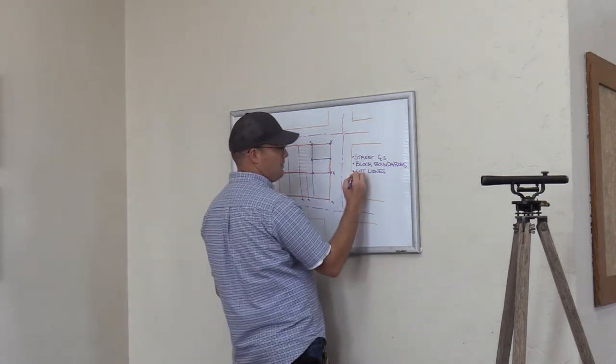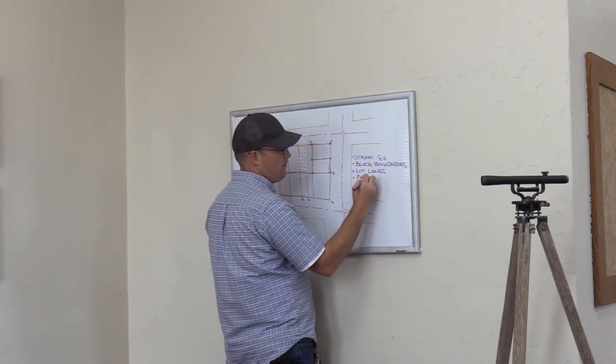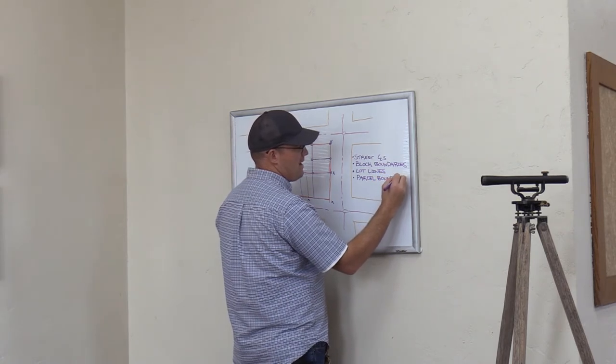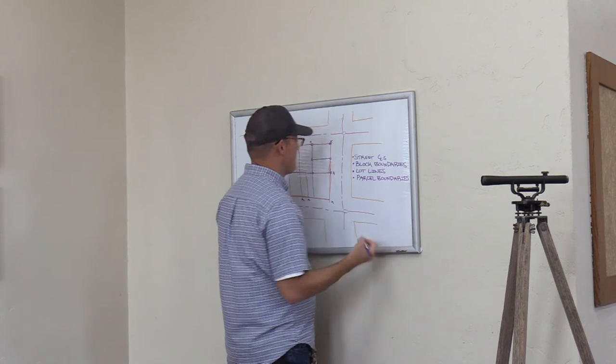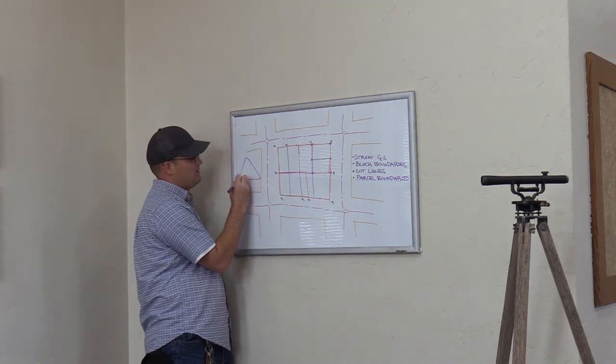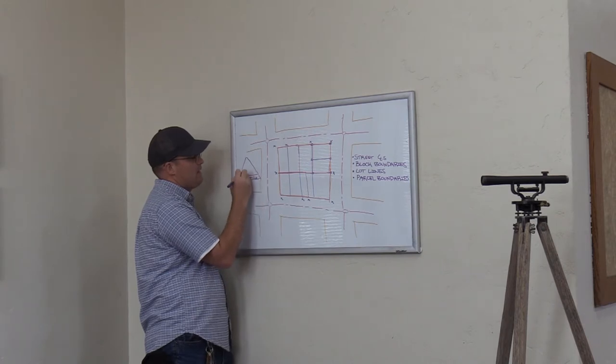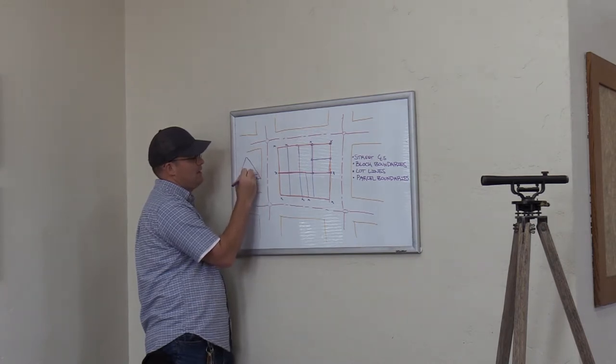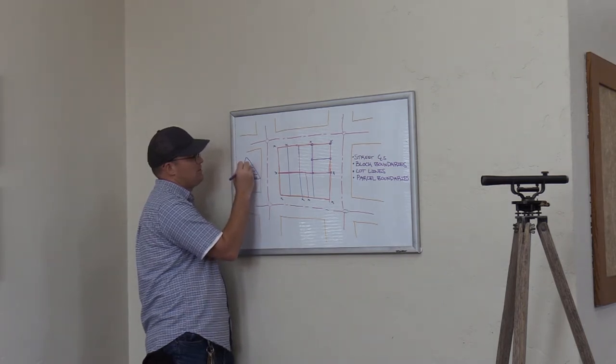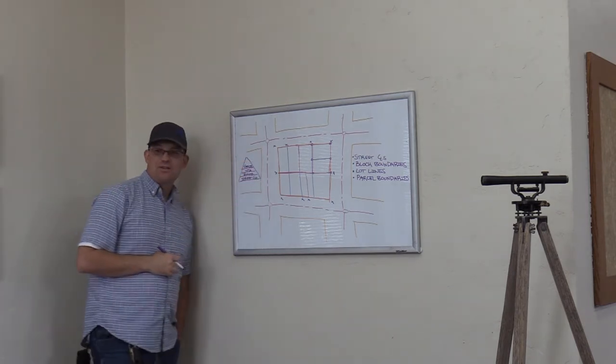We get the street center lines, then we get the block boundaries. Once we have the block boundaries, then we can put in the lot lines. Right, the blue. Once we have the lot lines in, now we can build a survey grade parcel layer. That's the thing that goes on. I built this wrong. That goes on the top. Okay, but you may ask yourself, so if I had to do this as a pyramid, it looks like this in the GIS. I'm not going to draw a very good pyramid either. So this is street center lines. And then we have block boundaries, blocks, lots, parcels, parcels at the top, right?